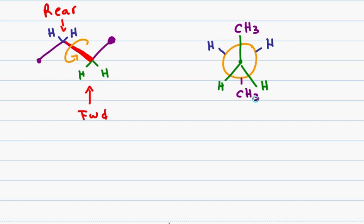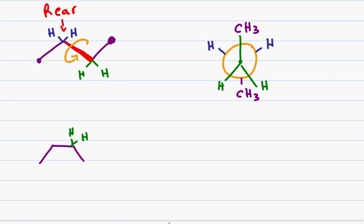If I want to look at the conformer or the conformational isomer of this molecule, I can draw it both in the sawhorse and in the Newman Projection. The sawhorse is your standard line structure, and here I will show the eclipsed version and draw my two green hydrogens up and my two blue hydrogens up.